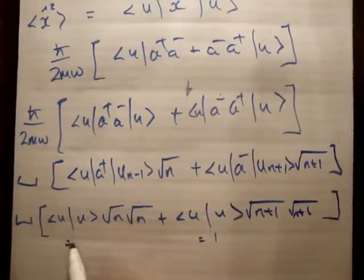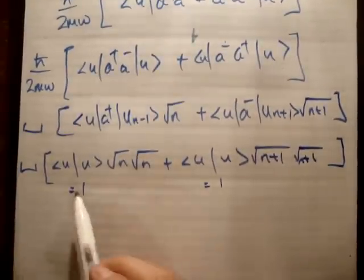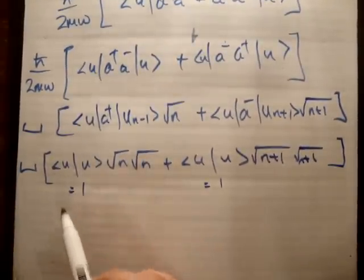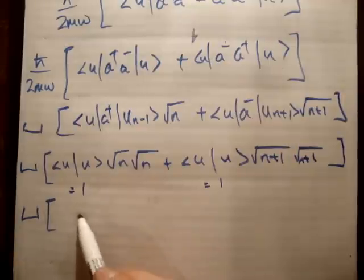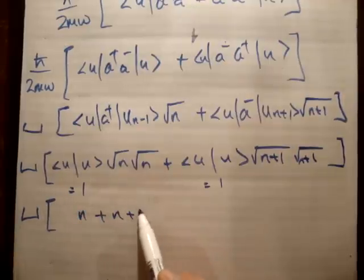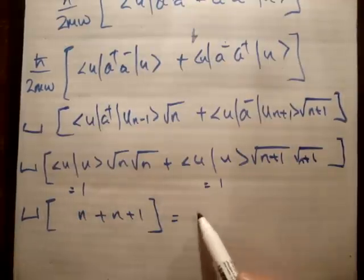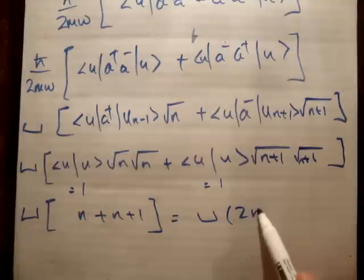So this integral here is 1, this integral is equal to 1, for reasons I've said before. These are clearly the same integral, so they are parallel, so this integral is going to be 1, constants out front, times n plus n plus 1, like that, which is equal to our constants times 2n plus 1.